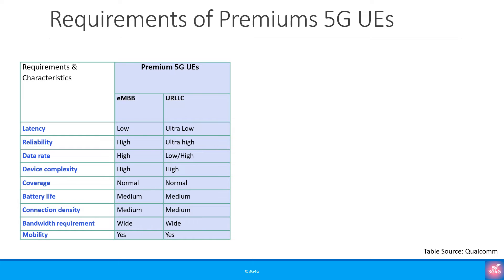eMBB and URLLC devices can be considered high-end premium UEs. The requirements of these UEs are summarized in a table originally from a Qualcomm document, referenced at the end of this presentation. The main differences between them are data rates, latency, and reliability. While there are no commercial URLLC devices in the market yet, smartphones and fixed wireless access devices are examples of premium 5G UEs.